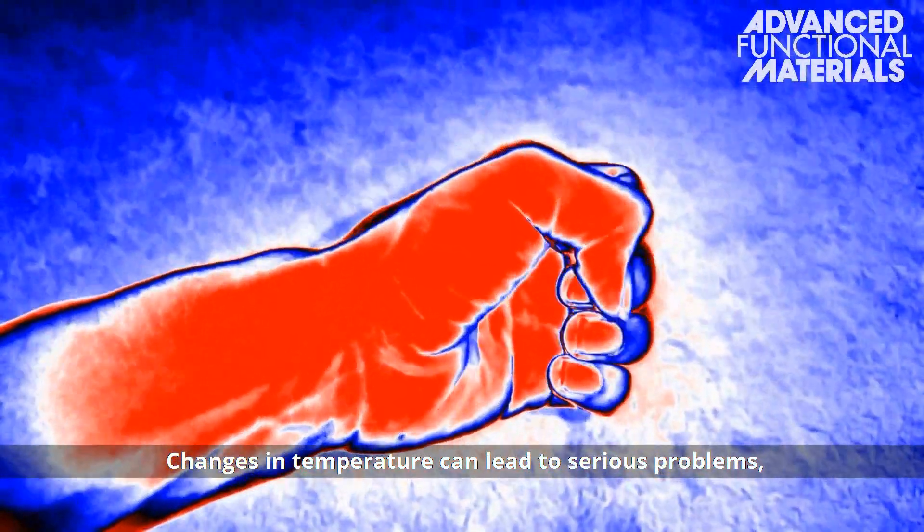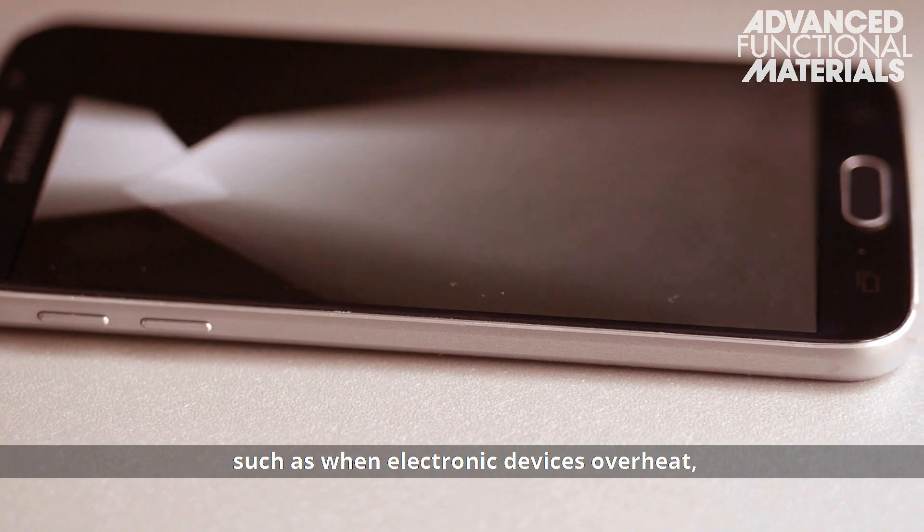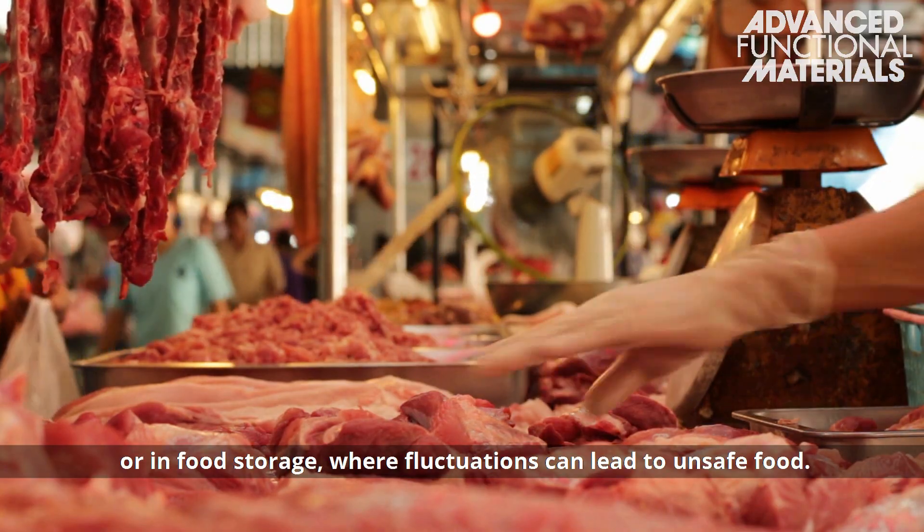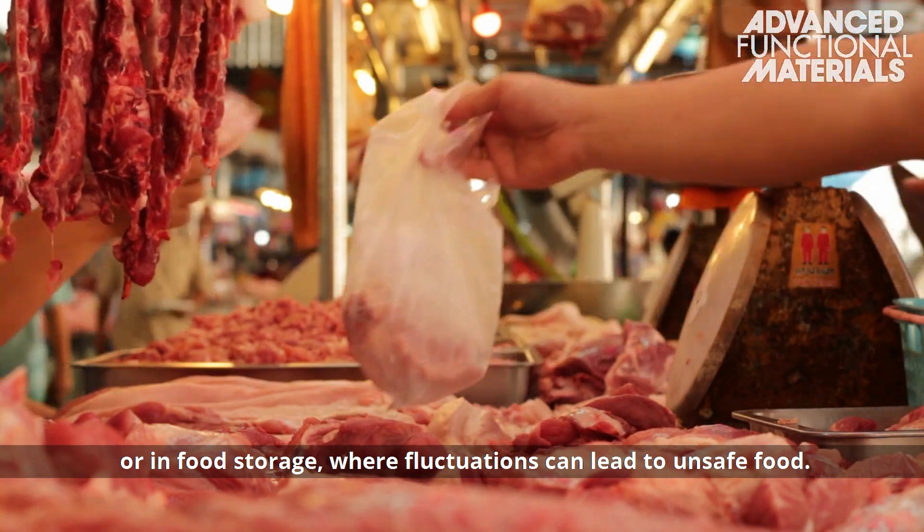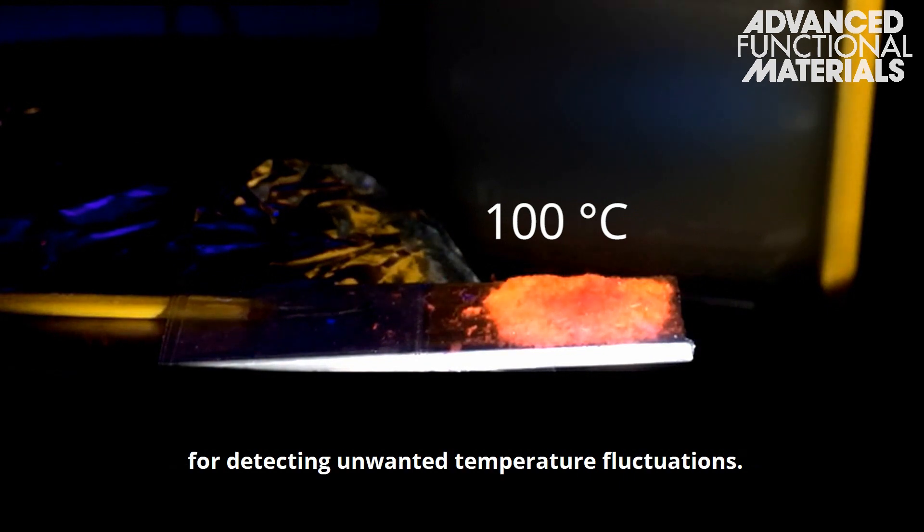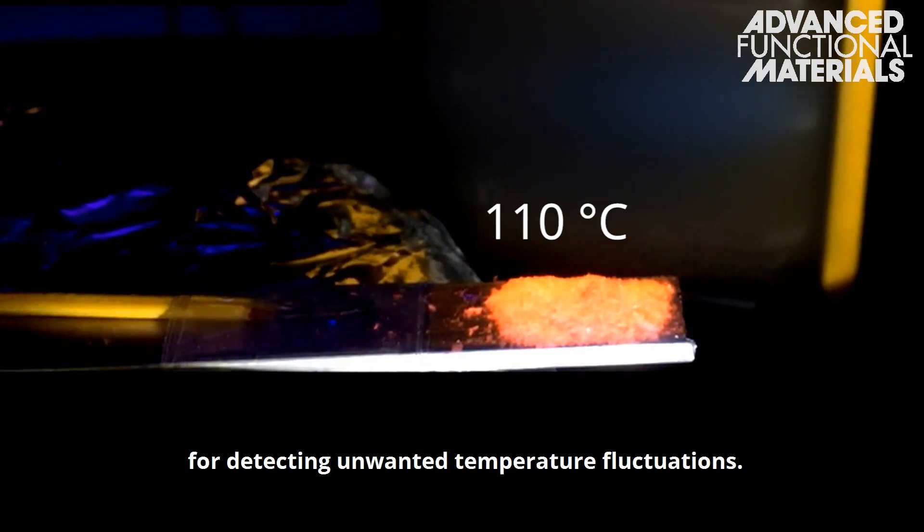Changes in temperature can lead to serious problems, such as when electronic devices overheat, or in food storage where fluctuations can lead to unsafe food. Temperature-responsive materials could provide a simple method for detecting unwanted temperature fluctuations.